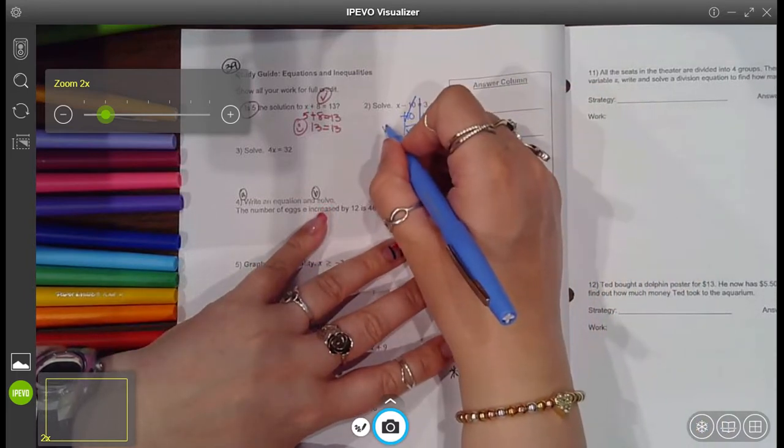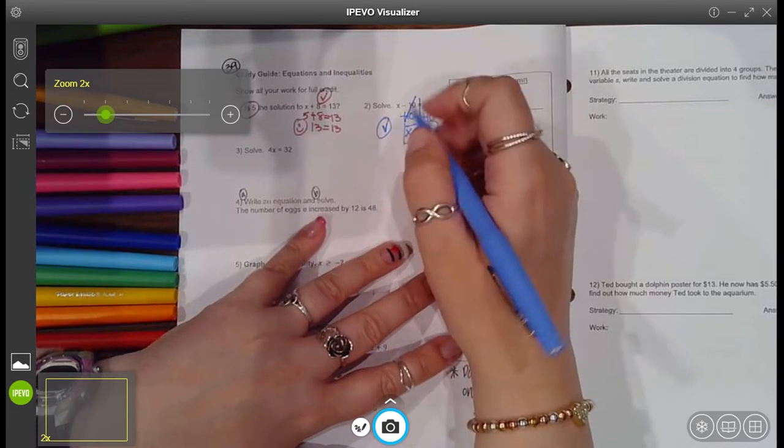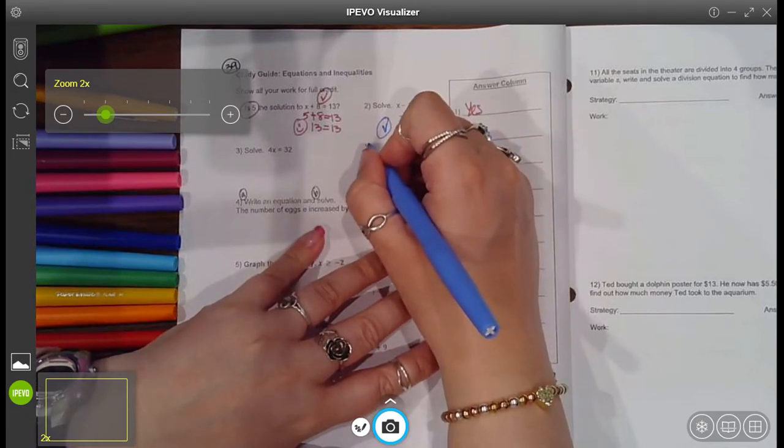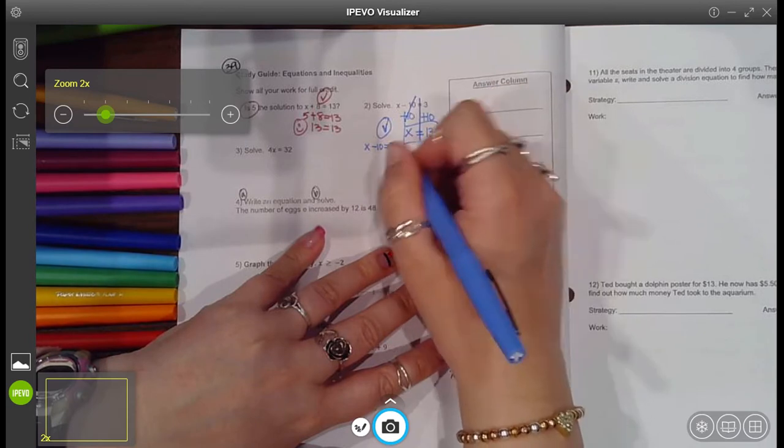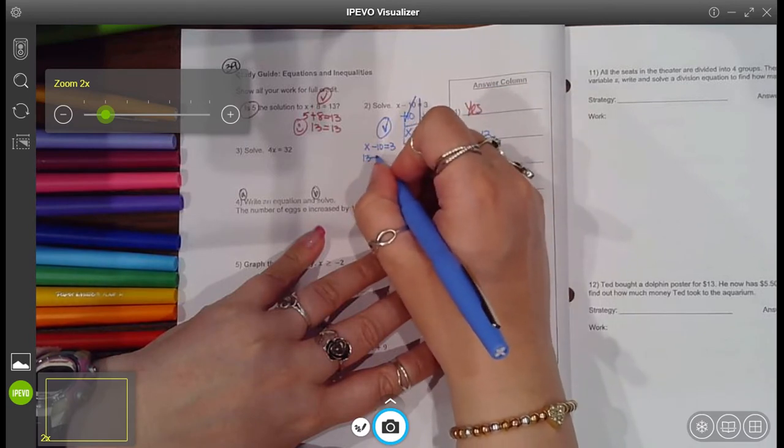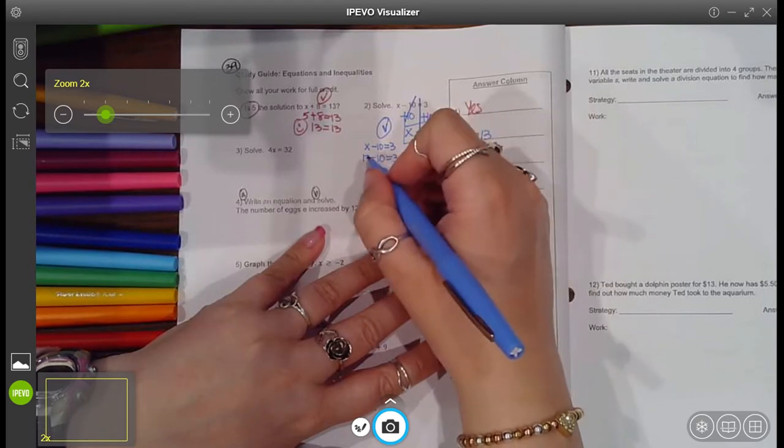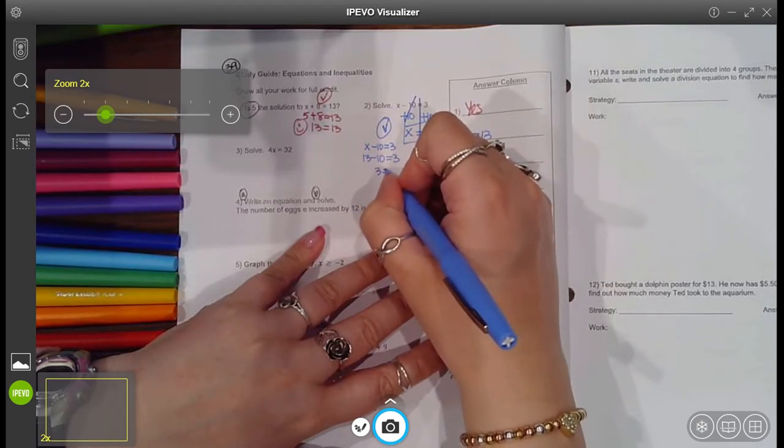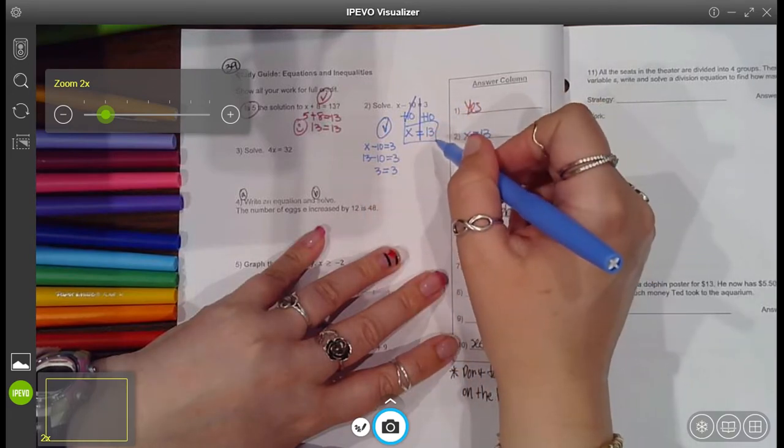So you got an answer of 13. So you'd write x equals 13 or just 13. And then before you move on, check it. Instead of writing out the words check, I just do a check mark. And to check it, I write my original equation. I substitute in what I think the answer is. I think it's 13. And then simplify it and make sure it made a true statement. So 13 minus 10 is 3. That's a true statement. So yes, 13 was right.